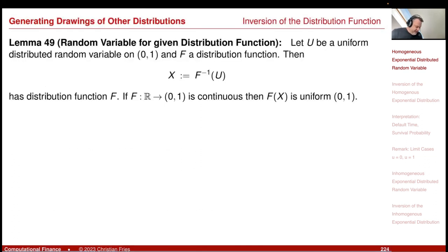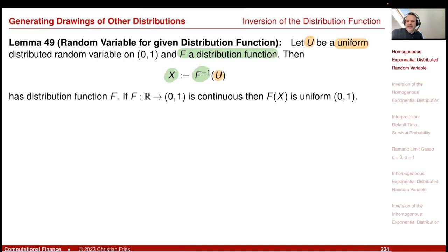This is based on a lemma: given a uniformly distributed random variable, I can transform it to an f-distributed random variable using the inversion of the distribution function, obtaining a random variable x which is f-distributed. Applying this inversion to a uniform sequence gives a sequence x_i, which is a sampling of the random variable x having f-distribution.